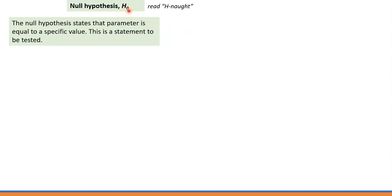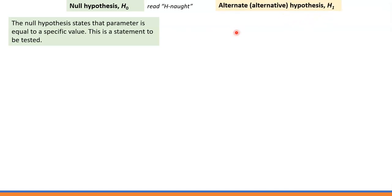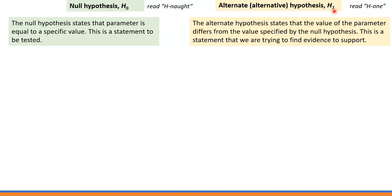In short, the null hypothesis is denoted by H with subscript 0, and it's read as H0. The alternative hypothesis states that the value of the parameter differs from the value specified in the null hypothesis, and that's the statement we're trying to find evidence to support. That evidence is the sample.